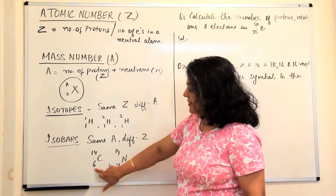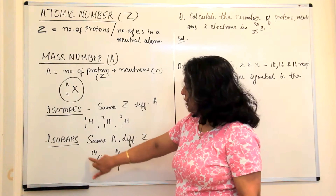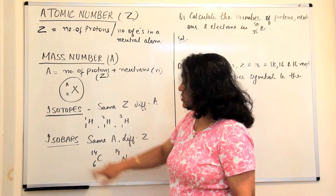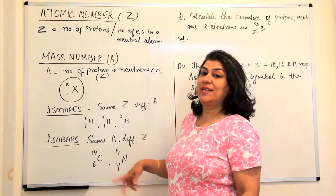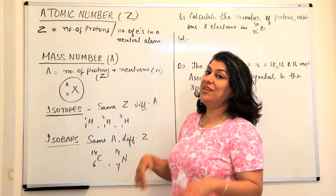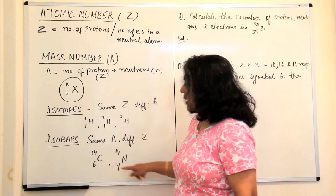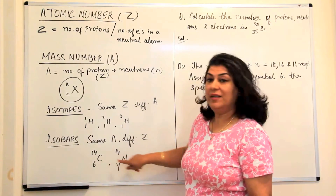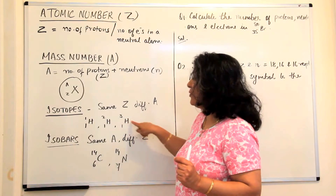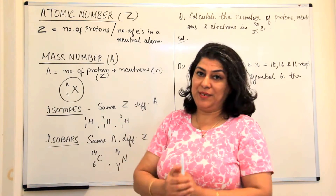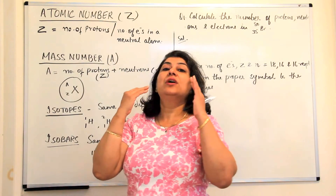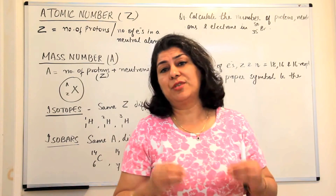For example, carbon has six protons but one of its isotopes has eight neutrons, therefore its mass is 14. Nitrogen has seven protons and seven neutrons, therefore its mass is also 14, but their atomic numbers are six and seven respectively. So when you write isobars, you write the symbols of the elements which they are for, while for isotopes the symbol remains the same because they are atoms of the same element.